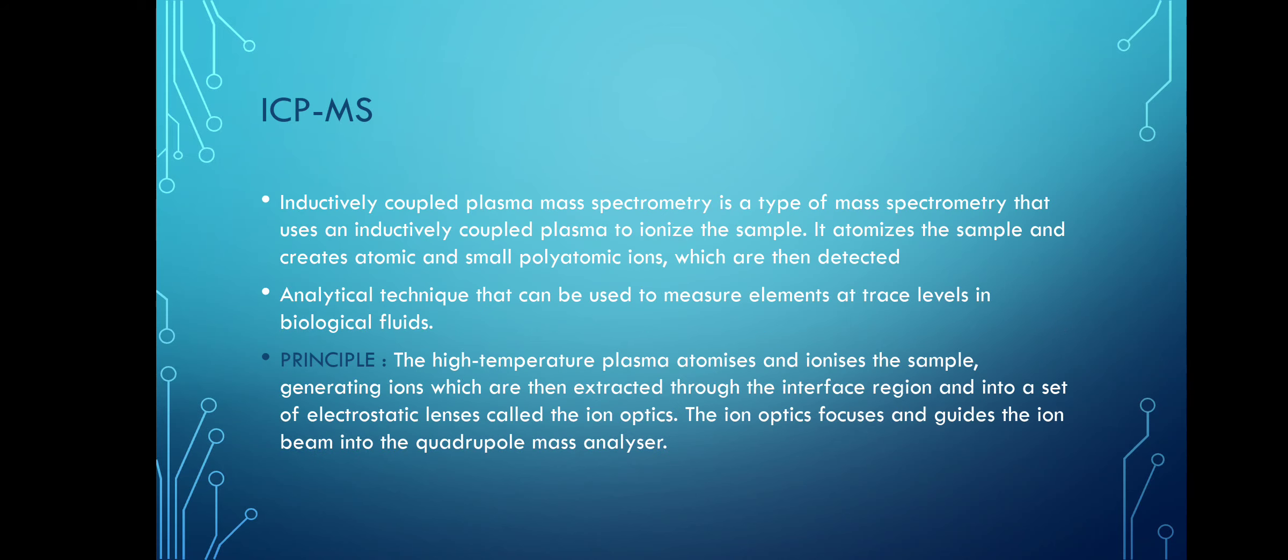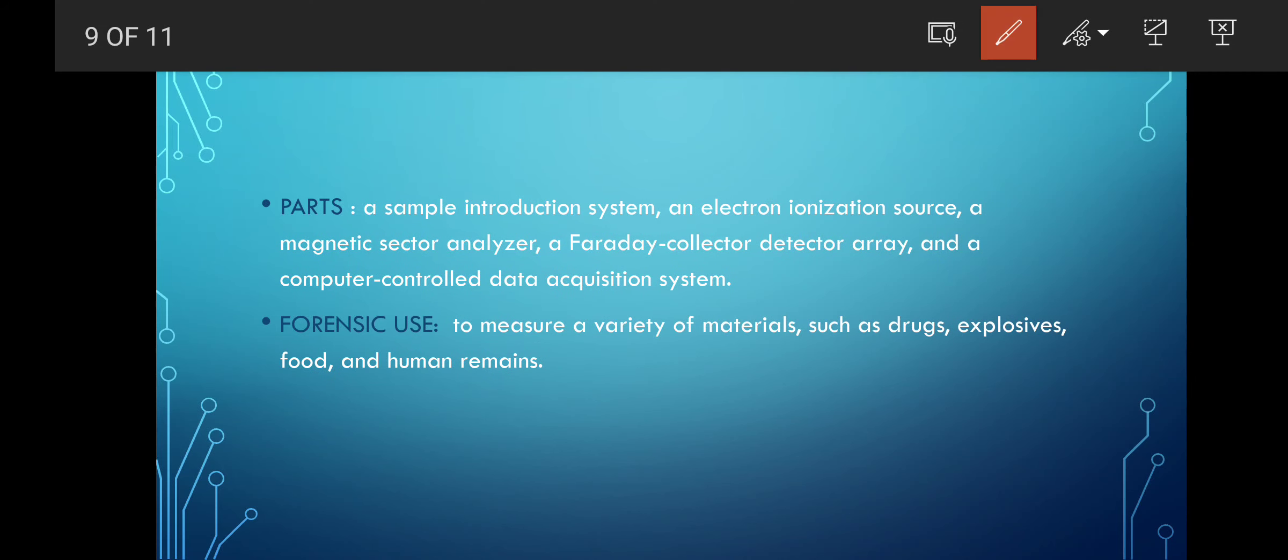The parts of this include the sample introduction system, an electron ionization source which ionizes the electrons, the magnetic sector analyzer that determines how many particles are magnetized, a Faraday collector detector array that collects all the analyzers, and a computer controlled data acquisition system like a monitor. It is used to determine various trace materials in drugs, explosives, food and human remains.